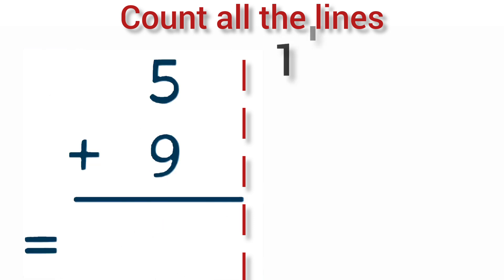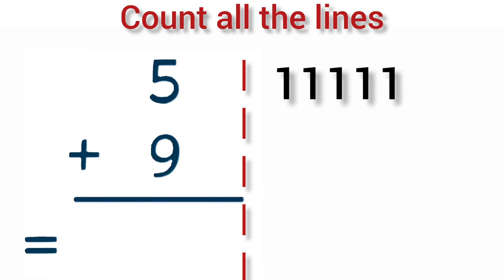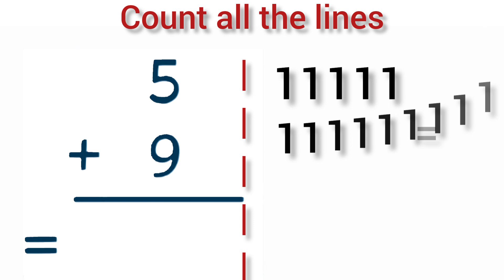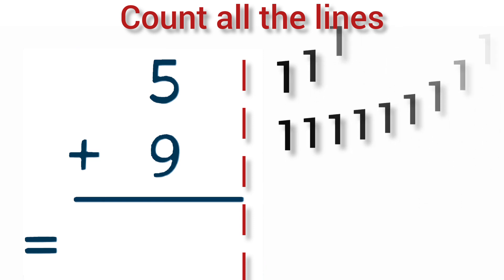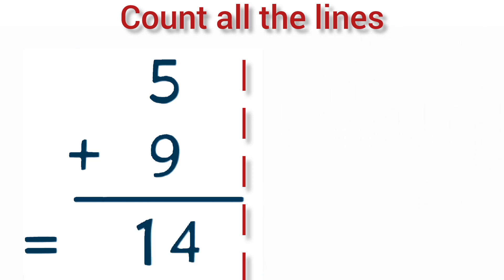Add 5 plus 9. 5 lines plus 9 lines is equal to 14. So, 5 plus 9 is equal to 14.